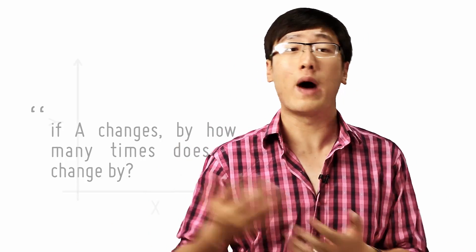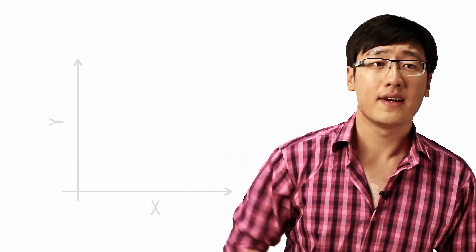So if I were to write a graph that has Y on the Y axis and X on the X axis and a line like this, then the elasticity of the line will simply be how much does X change if Y changes.